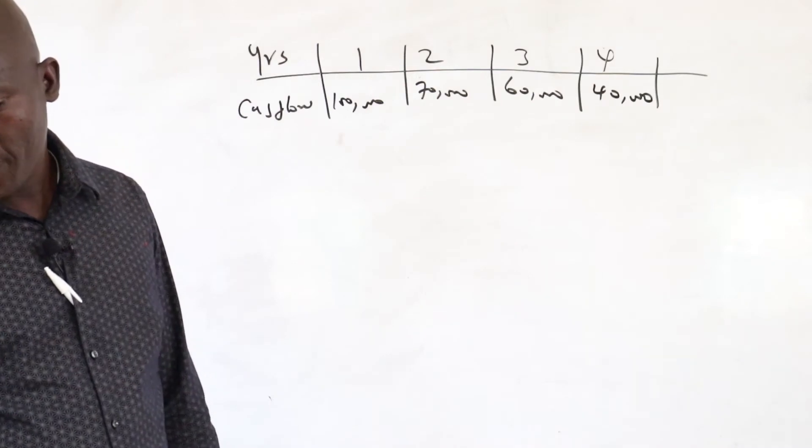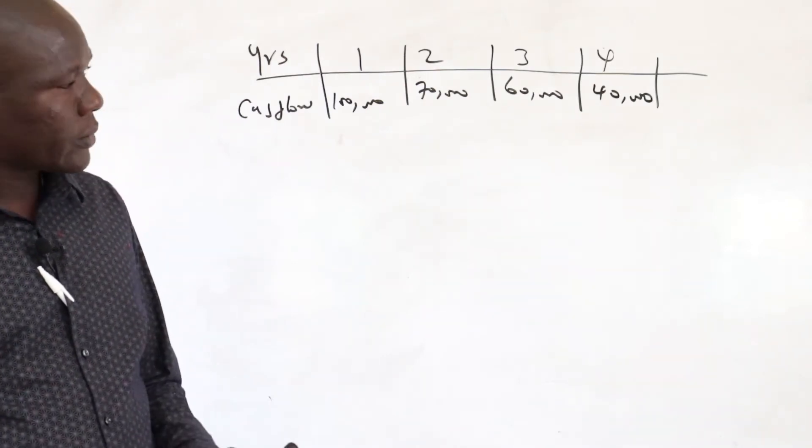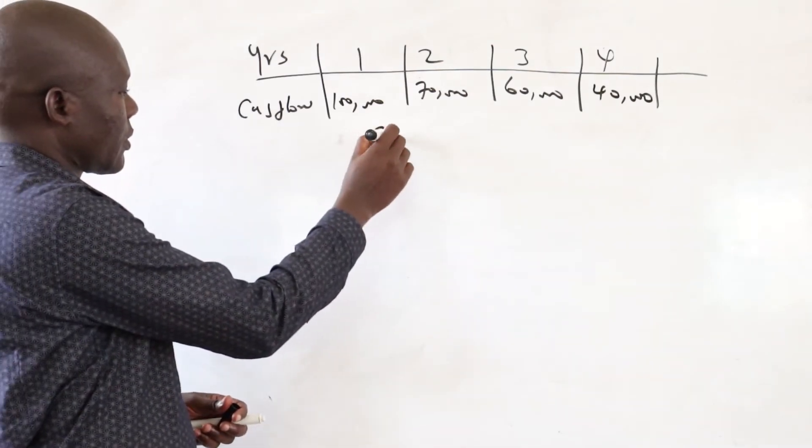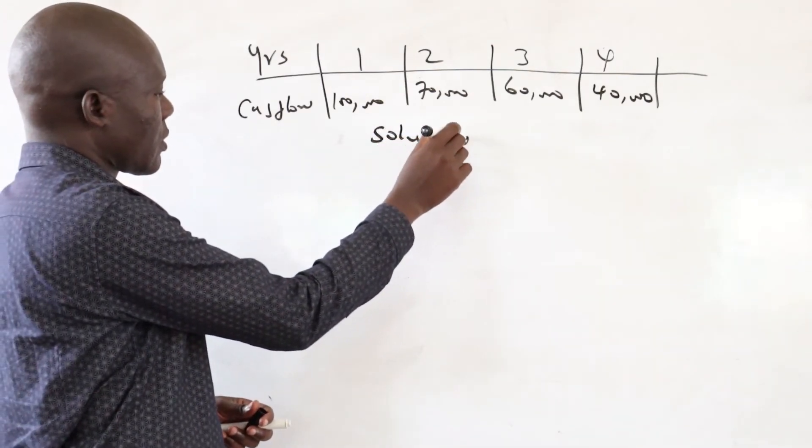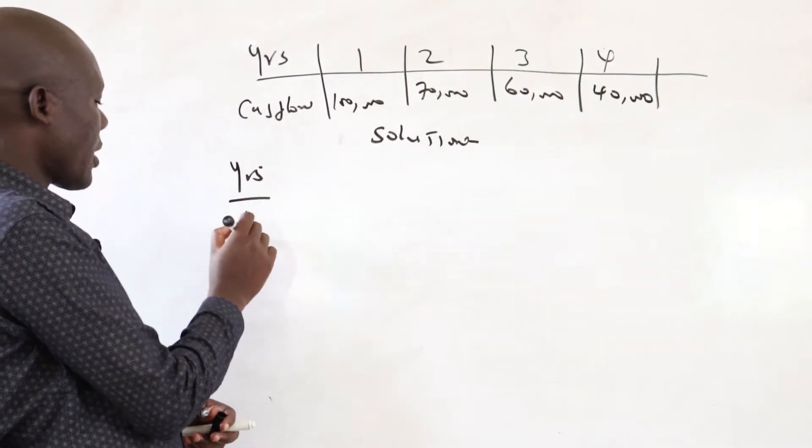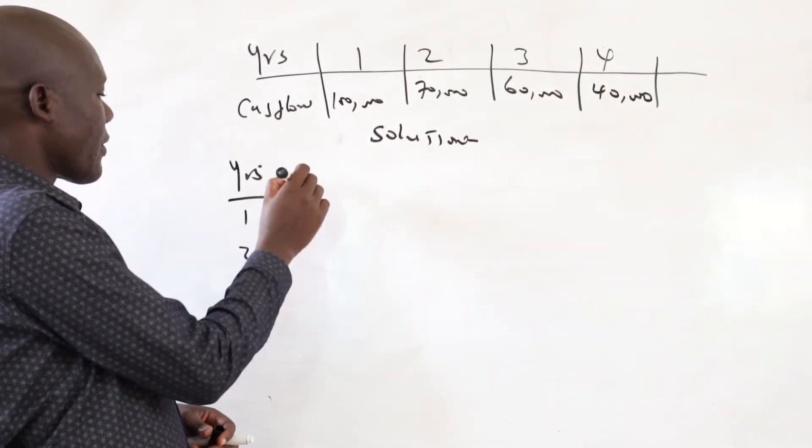So the payback period will be computed as follows. Solution: this is years one, two, three, four. The cash flows.